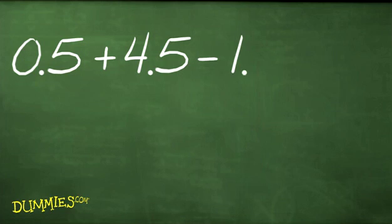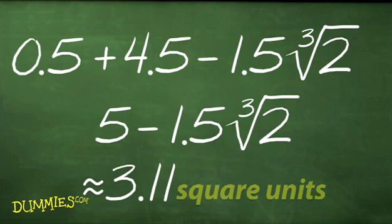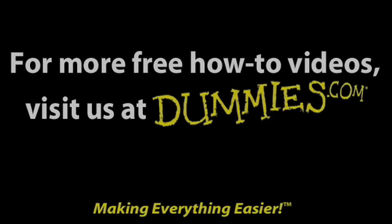Finally, add the areas of the two regions to get the total area. In this case, it's 3.11 square units. Follow these easy steps, and you'll have the area in no time.